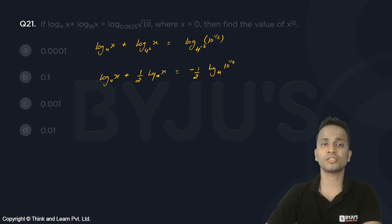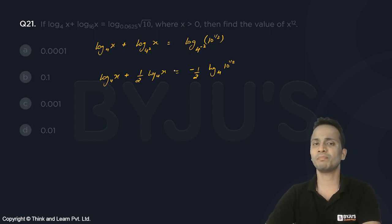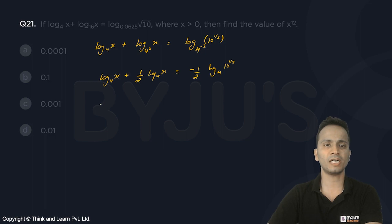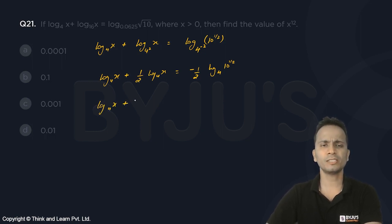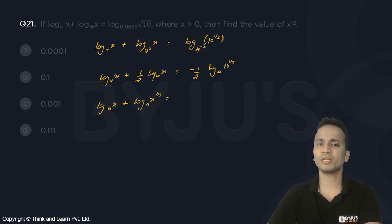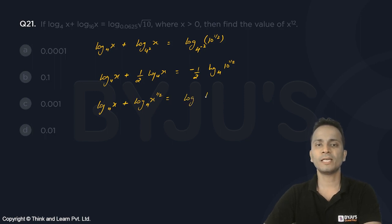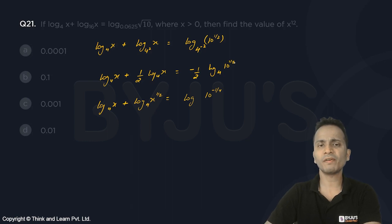The coefficients in front of x become powers of x, or powers of 10 raised to the power 1/2. So it becomes: log of x to the base 4, plus log of x raised to the power 1/2 to the base 4, equals log of 10 raised to the power minus 1/4 — since the existing power of 1/2 and minus 1/2 multiply to give minus 1/4 — to the base 4.